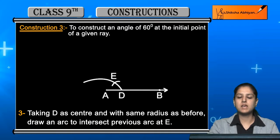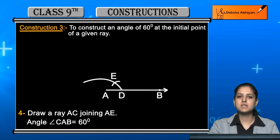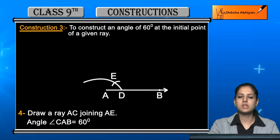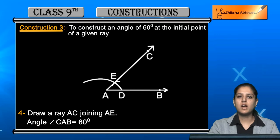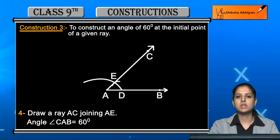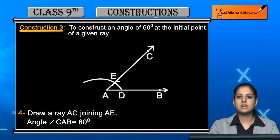अब next step में एक ray AC बनाएंगे — A से start होकर, point E से pass होकर, C तक जाएगी। एक line ऐसी बनानी है जो start हो रही है A से और pass हो रही है E से। यह जो AC ray बनाई है, यह आपके angle को complete करेगी। Now the angle CAB is of 60 degrees — यह बन गया आपका 60 degree का angle।